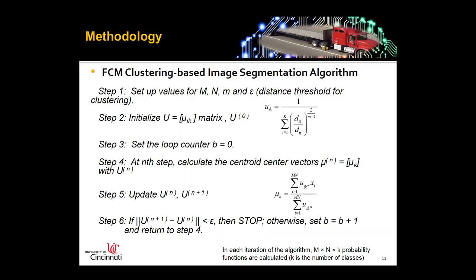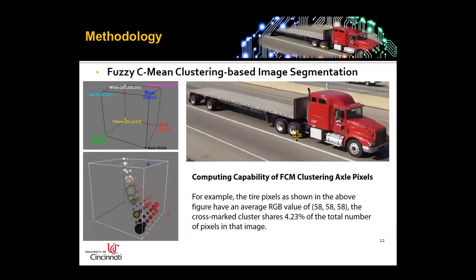Otherwise, we continue the next round of calculation and set B equals B plus one. This is an iterative process until we achieve the goal — identifying which cluster each pixel falls into.